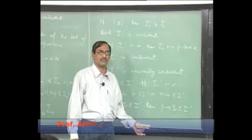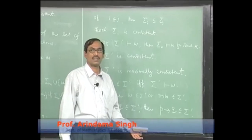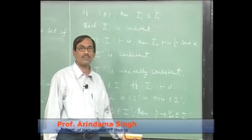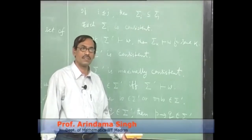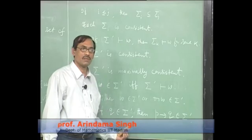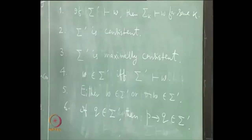p implies q — that follows because of axiom 1: q implies p implies q. You already have q in sigma prime, so p implies q follows. So it belongs to sigma prime.